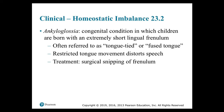Clinical homeostatic imbalance 23.2: If the lingual frenulum is too restrictive, you cannot eat or speak normally. The condition is known as ankyloglossia — often referred to as tongue-tied — a congenital condition in which children are born with an extremely short lingual frenulum, resulting in restricted tongue movement and distorted speech. This can be corrected surgically by snipping off the frenulum.